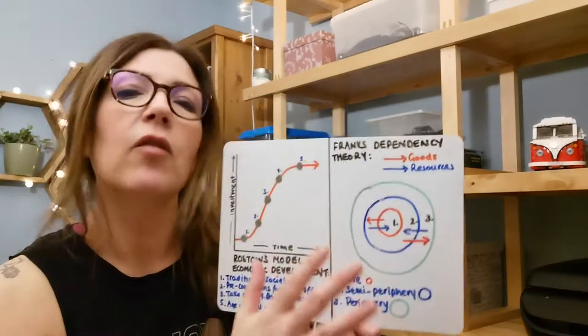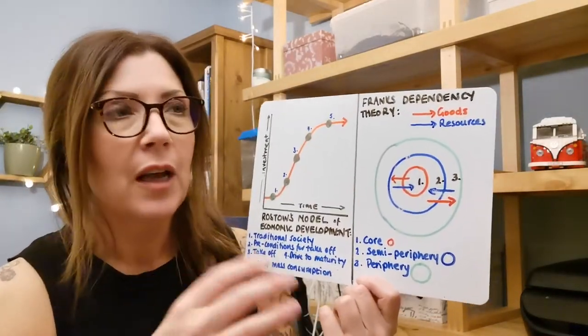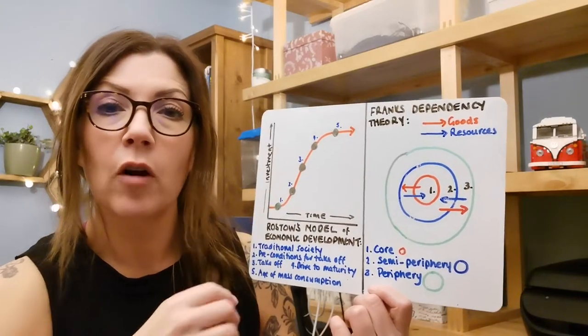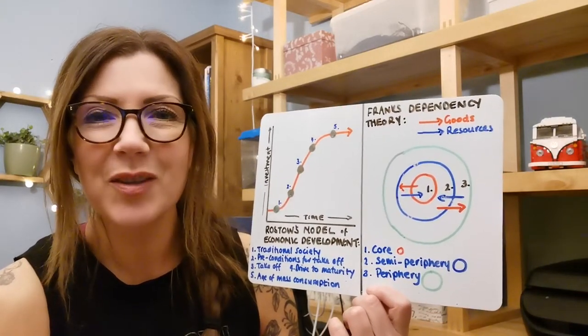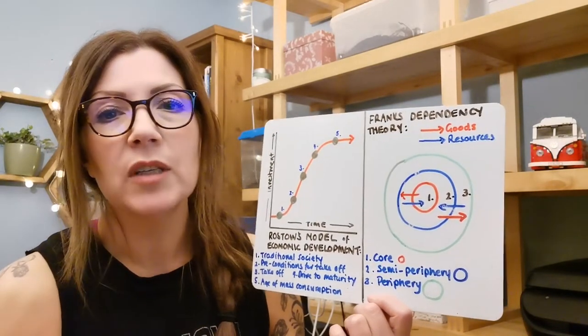Right, okay. So like I said before, Frank came along in the 60s and he said no, that wasn't really true. Many of these countries suffered from colonialism or post-colonial issues. They'd been exploited and the land had been taken off them, so they weren't able to develop.